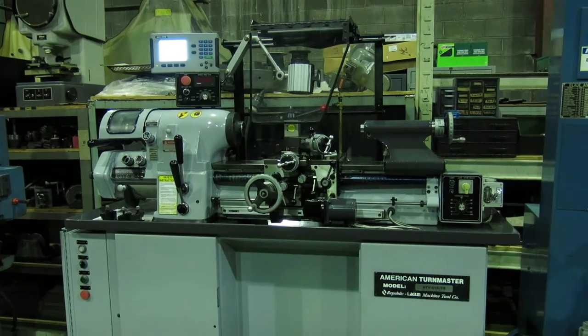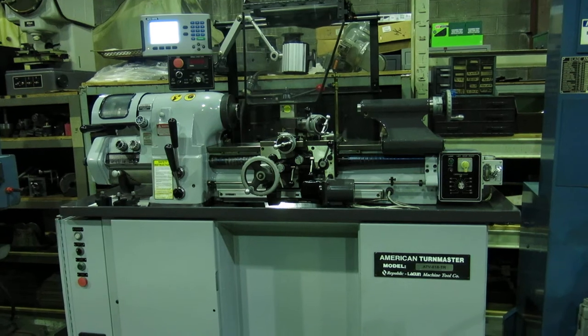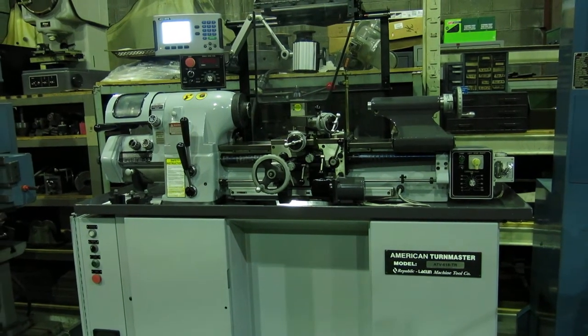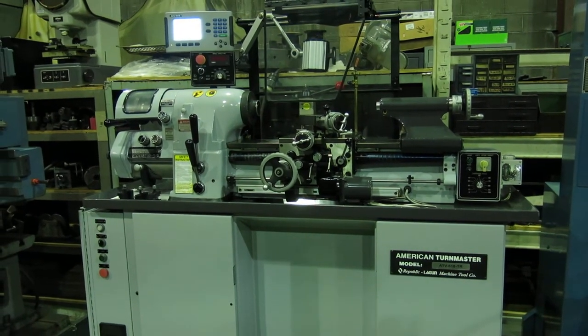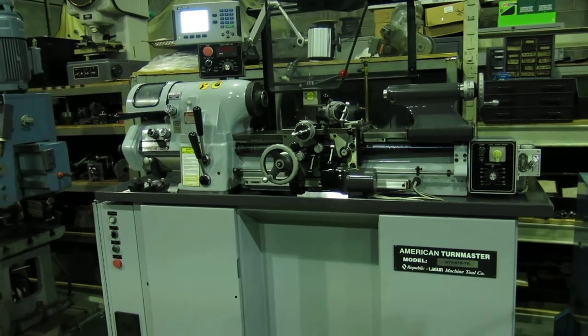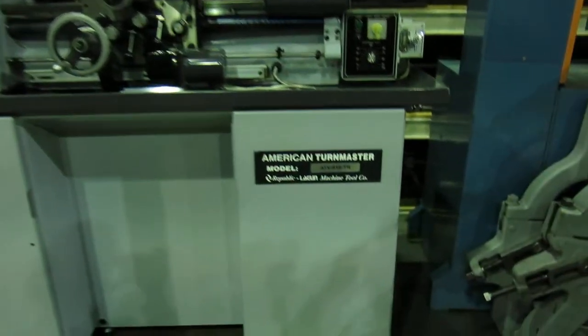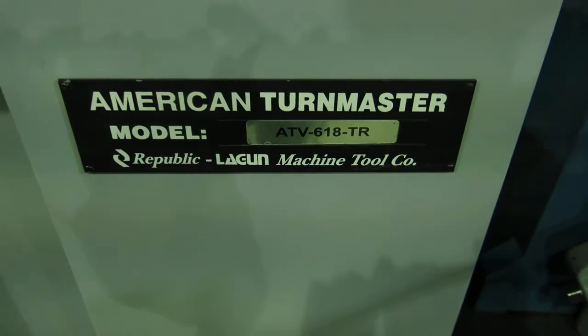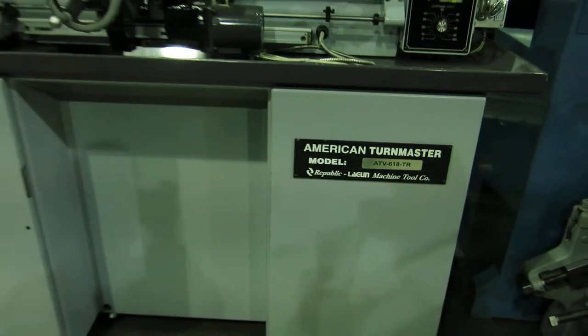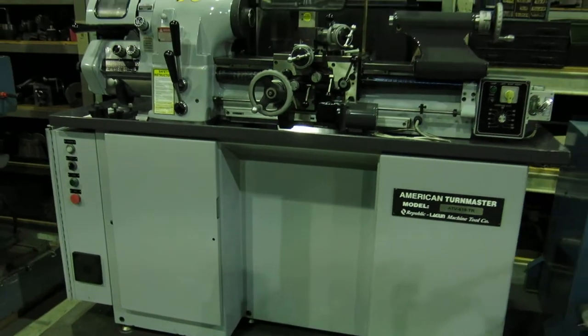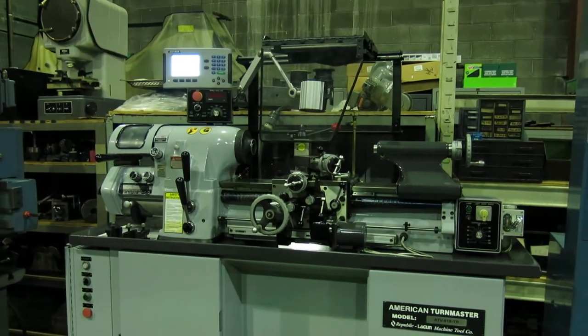Today at Mullen Machinery we have an American Turnmaster, model ATV618TR. They are distributed by Republic Lagoon. It's a copy of the famous Hardinge HLVH high precision tool room lathe.